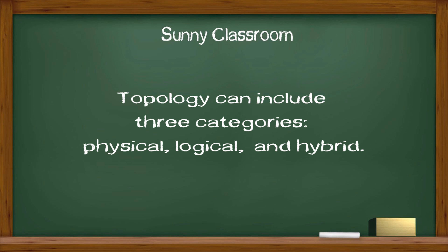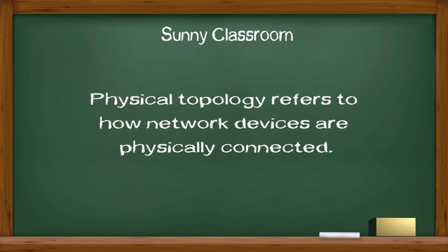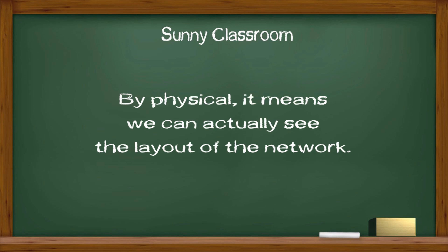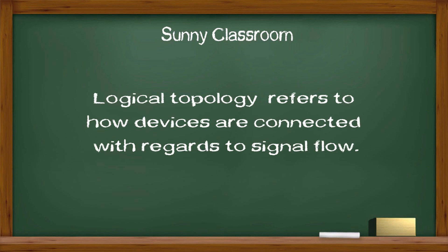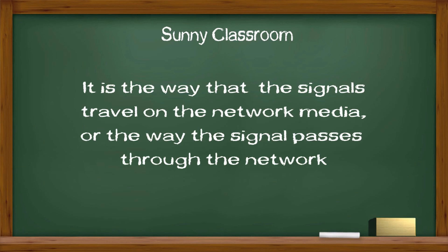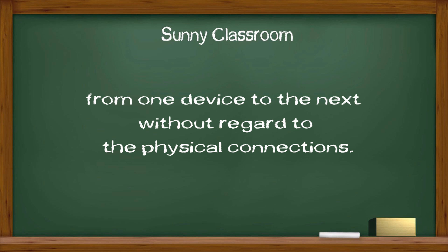Topology can include three categories: physical, logical, and hybrid. Physical topology refers to how network devices are physically connected — we can actually see the layout of the network. Logical topology refers to how devices are connected with regards to signal flow. It is the way that signals travel on the network media from one device to the next without regards to the physical connections.